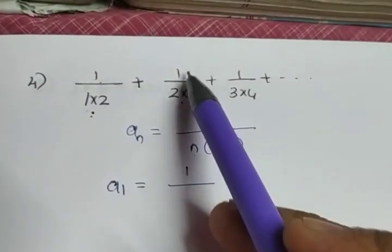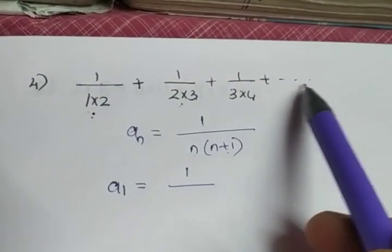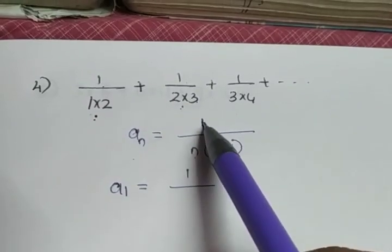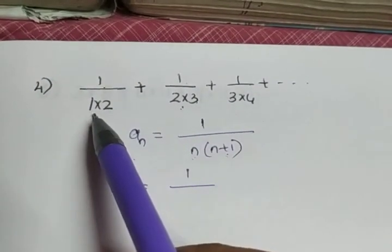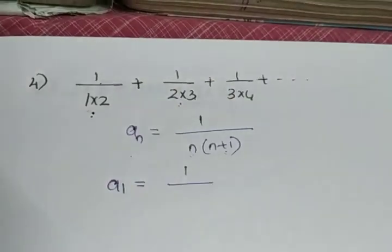The next one is 1 by 1 into 2 plus 1 by 2 into 3 plus 1 by 3 into 4 plus etc. The nth term is 1 by n into n plus 1 because the first term is 1 into 2 in the denominator, the second term is 2 into 3.